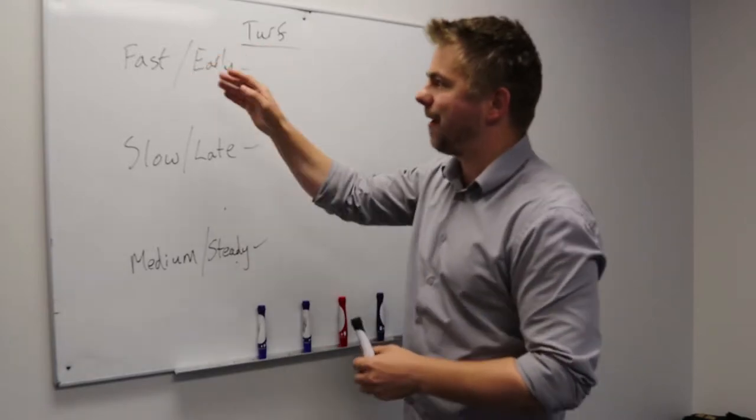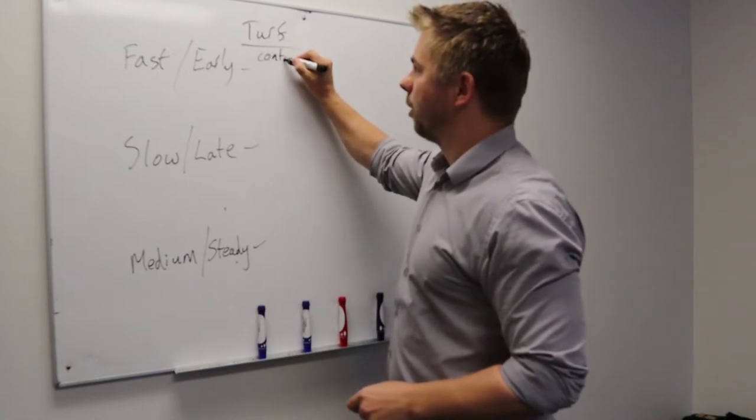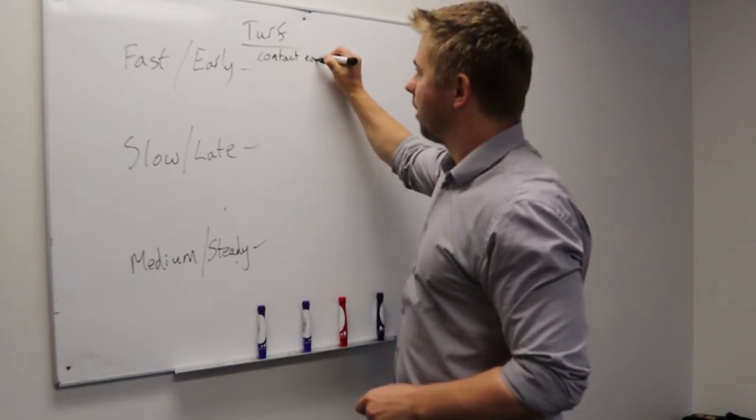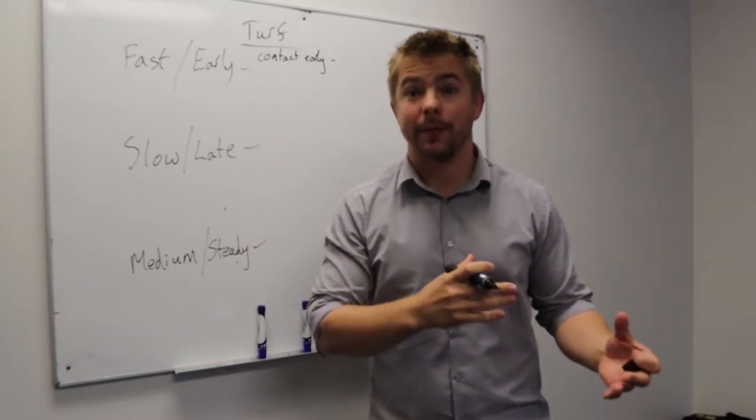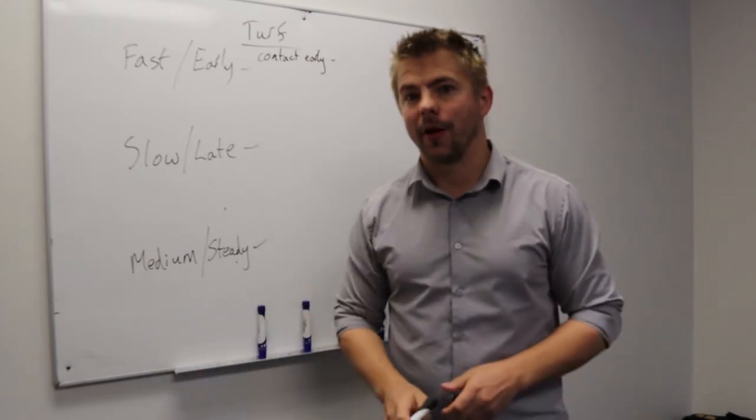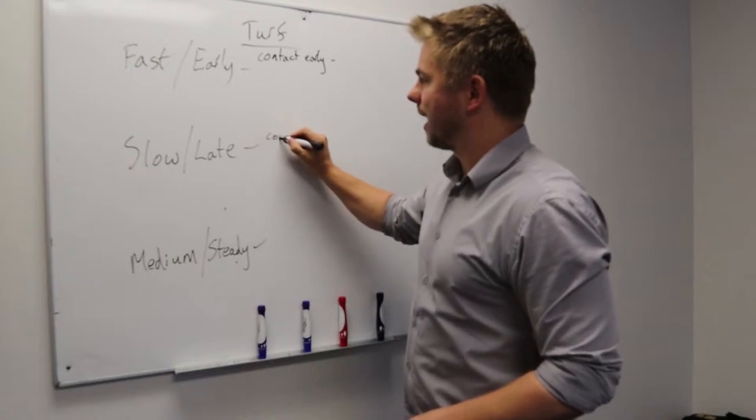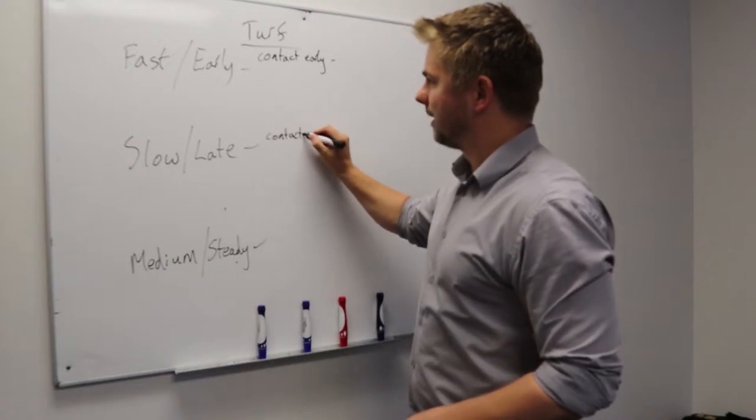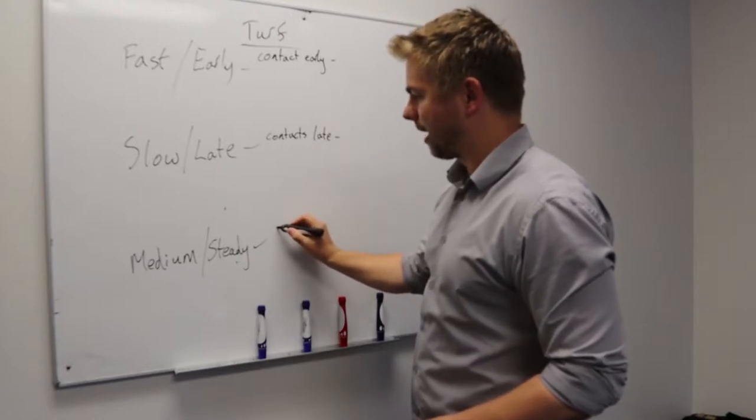So when we talk about a fast and early turf, that means we get a lot of contacts early. The reason why we say this might predominantly be lower demographic is because you get a few more unemployed people, maybe stay-at-home moms and stuff like that. And obviously you get a lot of people that are out of work. So with slow and late turf, that means your contacts are increased late.